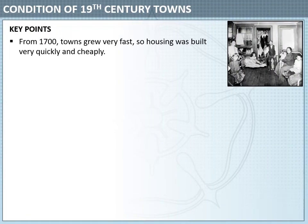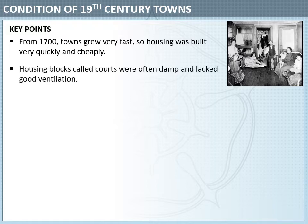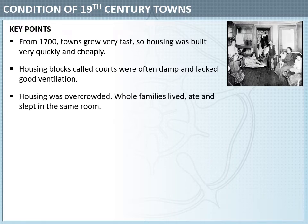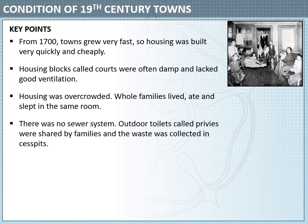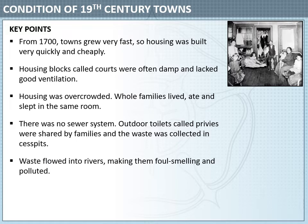The first thing we need to talk about is the condition of 19th century towns. From 1700, towns grew very fast in Britain, largely due to rapid industrialisation, so housing was needed for people who were moving to towns to work in new factories — this was built very quickly and very cheaply. These housing blocks, often called courts, were often damp, lacked good ventilation, and became very overcrowded, with whole families living, eating, and sleeping in the same room. There were no sewer systems attached to these housing courts, so outdoor toilets called privies were used, shared by multiple families, and the waste was collected in cesspits.